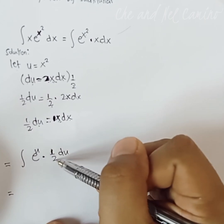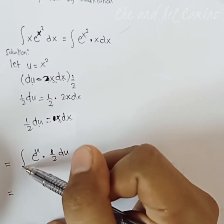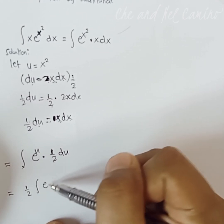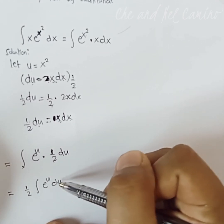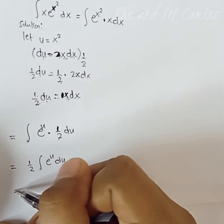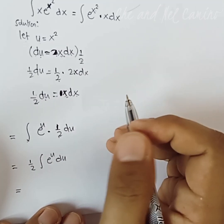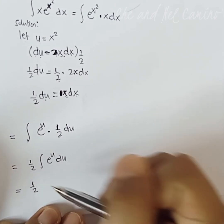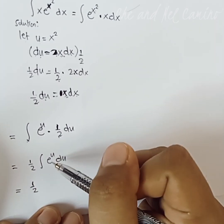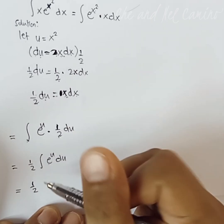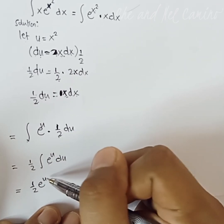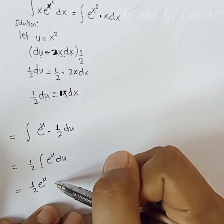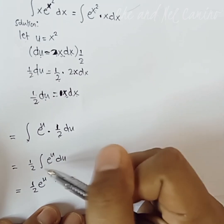We pull out the constant from the integral symbol, giving us one half times the integral of e to the power of u du. The next process is to perform the integration. The integral of e to the power of u is simply e to the power of u.